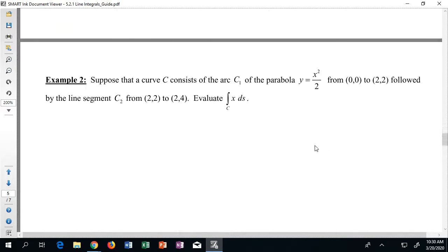We can see how this works down here in something like example number two. So suppose that a curve C consists of an arc C1 which is given by this parabola and then from (0,0) to (2,2) is kind of where those points are laid out or where this curve is laid out. And then after that starting directly from (2,2) we're going to get a line segment that connects (2,2) to (2,4) and our goal is to evaluate this line integral.